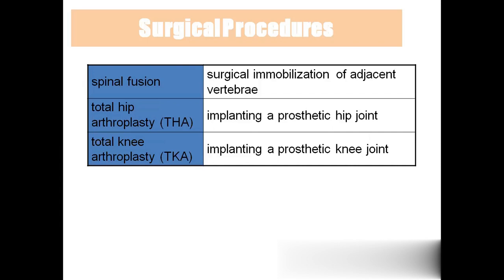Spinal fusion involves fixing the vertebral column to prevent movement — done for ankylosing spondylitis and spondylolisthesis. Total hip arthroplasty (THA) removes the natural hip joint and replaces it with a metal prosthetic hip joint. Total knee arthroplasty (TKA) removes the natural knee joint — performed when a patient has osteoarthritis or rheumatoid arthritis — and replaces it with a metallic joint.